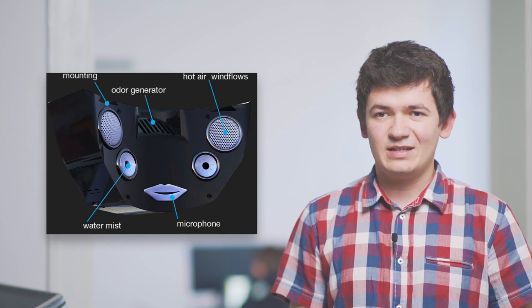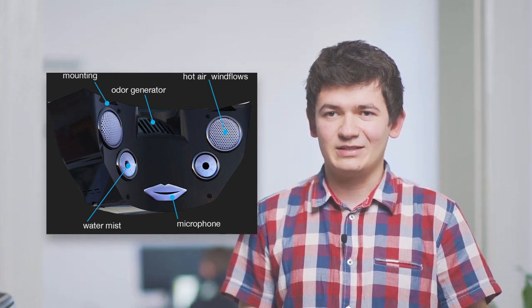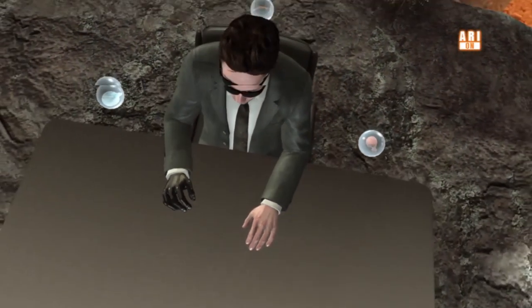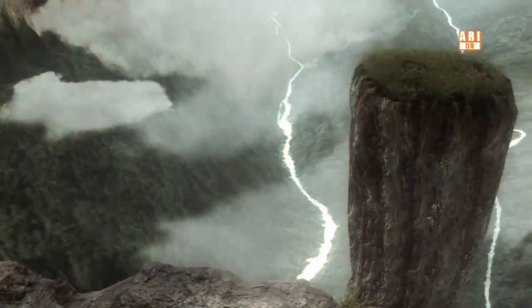Osoba biorąca udział w wirtualnej konferencji mogłaby poczuć się tak, jakby była tam na żywo. Na chwilę obecną VR działa na dwa zmysły – wzrok i słuch – jednak już teraz powstają pierwsze prototypy urządzeń działających na węch. W przyszłości możemy liczyć na bardziej realistyczną grafikę, dźwięk oraz działanie na pozostałe zmysły. Kto wie – może w dalszej przyszłości będziemy w stanie przenieść całą swoją świadomość do wirtualnej rzeczywistości, tak jak w filmach Matrix albo Tron.